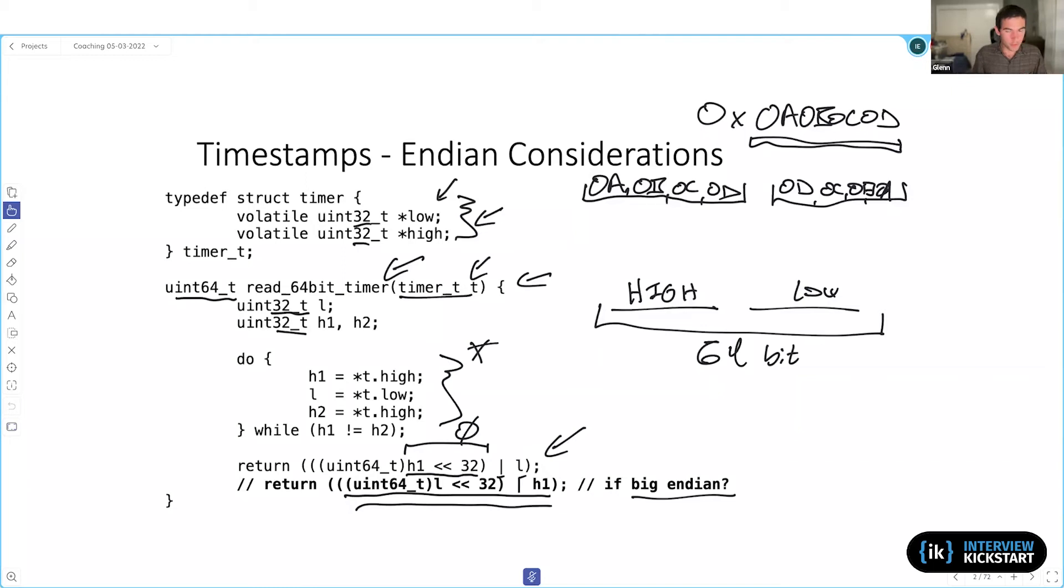So to cut to the chase, the answer is no. You don't need to have a separate implementation for big endian versus little endian. This code here will work fine regardless. So the question you might have is, well, why or how in a sense?